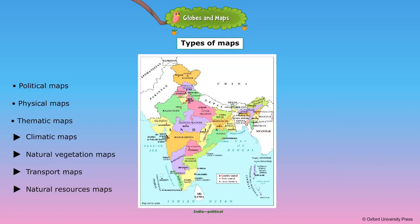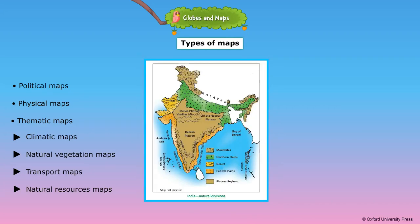There are different types of maps that serve different purposes. Political maps show the boundaries and the location of countries, states and cities. Physical maps show the physical features, such as mountains, plateaus, plains and seas.